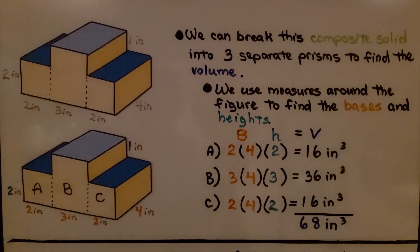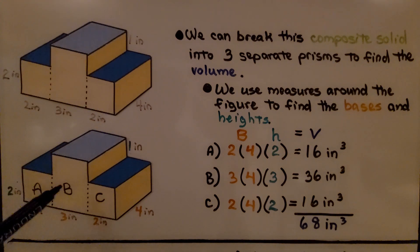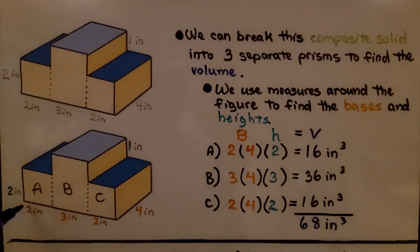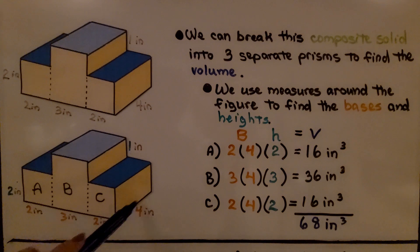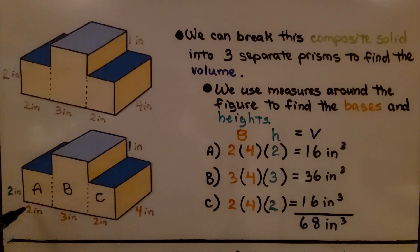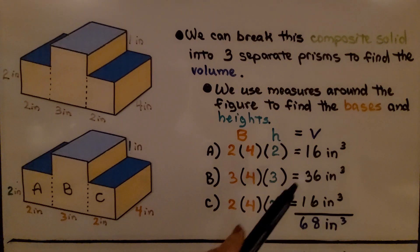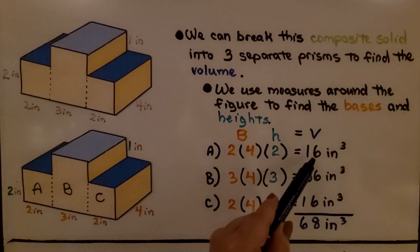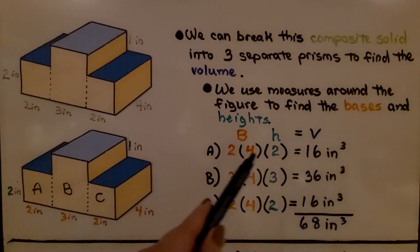Take a look at this composite solid. We can break it into three separate prisms to find the volume. We use measures around the figure to find the bases and heights. For A, we see it's two inches going this way and four inches this way, so we use two inches and two inches for a height. That gives us sixteen inches cubed for the volume.